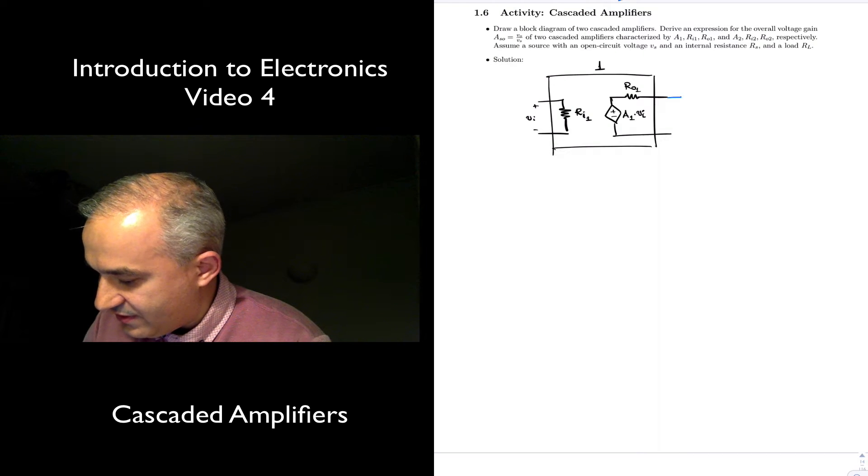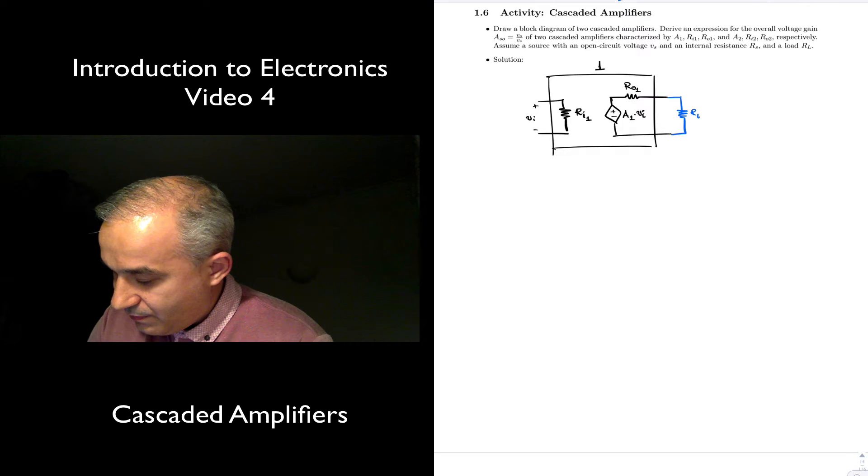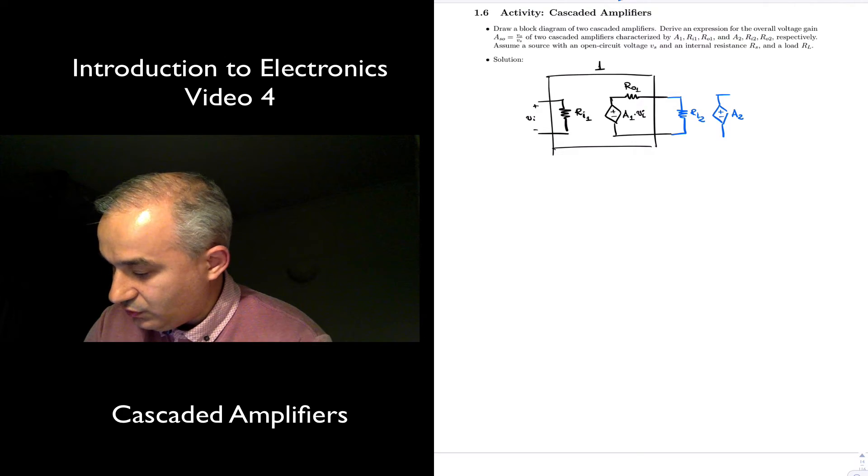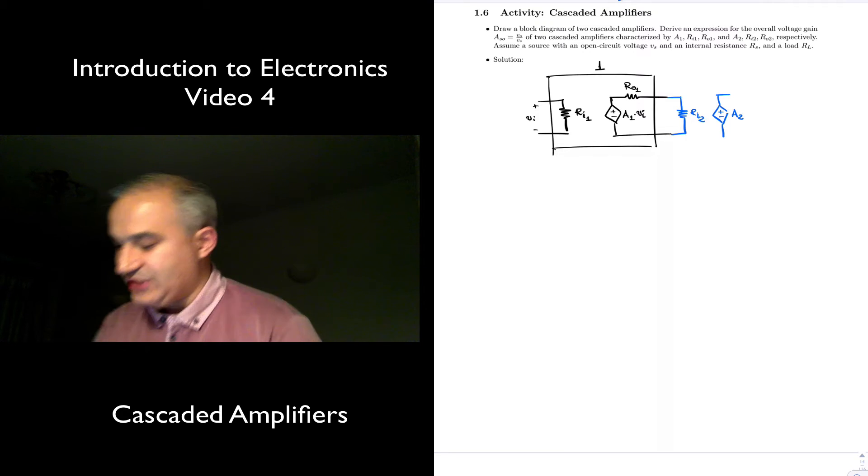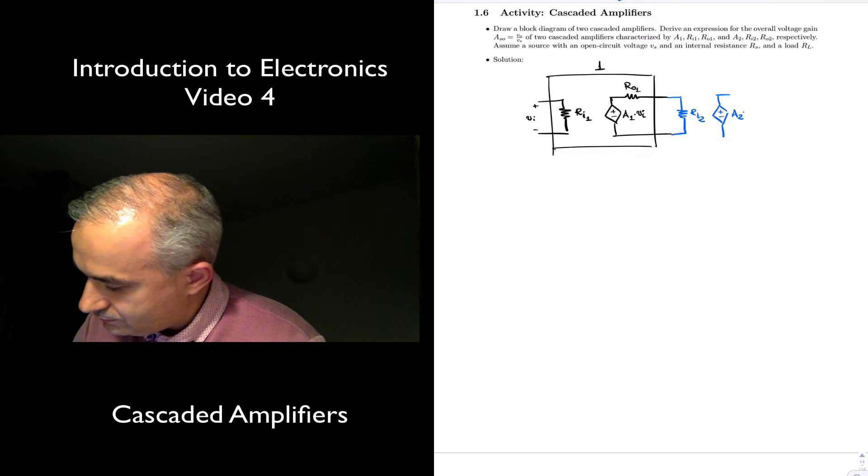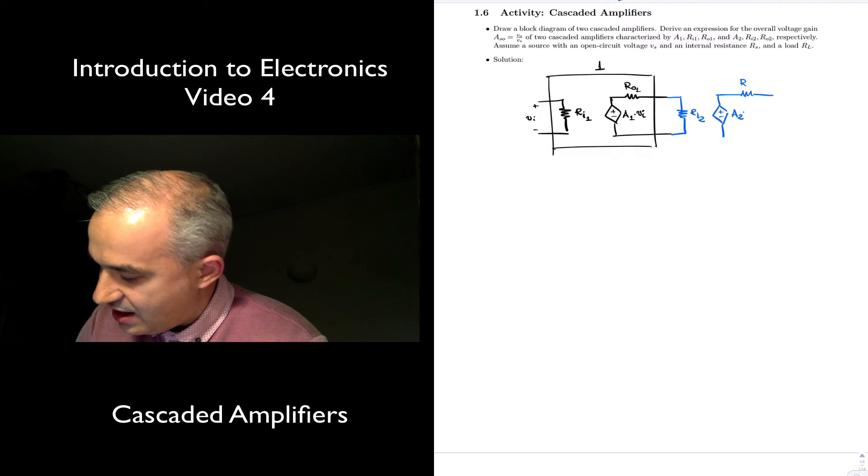We connect this to a second amplifier with input impedance Ri2. Again, we use a voltage-controlled voltage source to model our amplification. The gain in this case is A2, the open circuit voltage gain. It's going to have an output impedance Ro2.